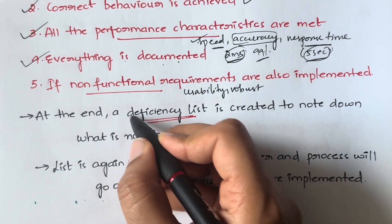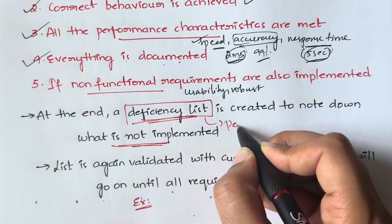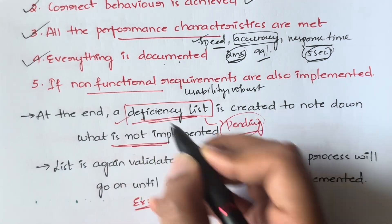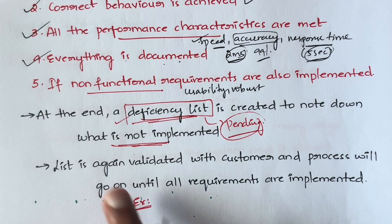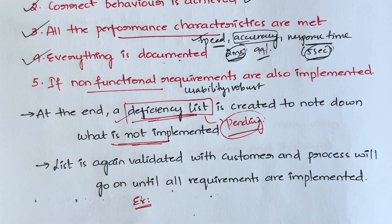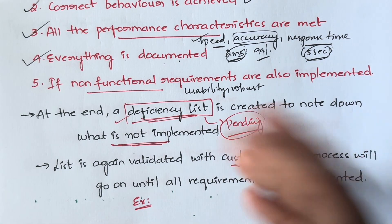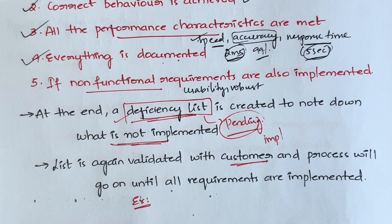At the end of validation testing, you create a deficiency list — a record of what is not implemented and what things are still pending. You can show this list to the customer, discuss what's missing, and check if they want to add or remove anything. If the customer wants additional features, you implement them and do the testing again. This entire cycle continues until all requirements are completely satisfied.